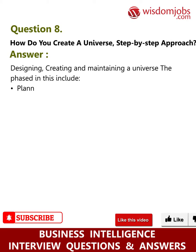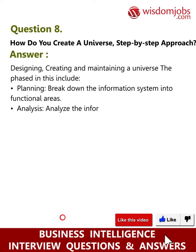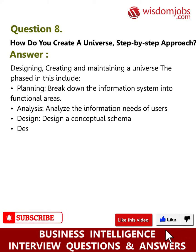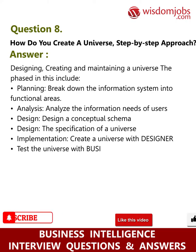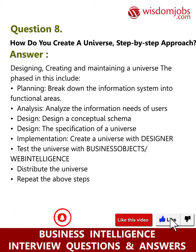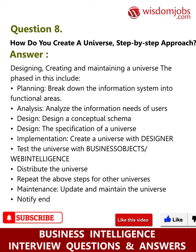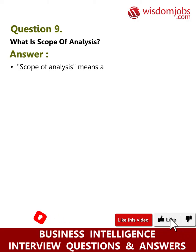Planning — break down the information system into functional areas. Analysis — analyze the information needs of users. Design — design a conceptual schema and design the specification of a universe. Implementation — create a universe with Designer. Test the universe with Business Objects/Web Intelligence. Distribute the universe. Repeat the above steps for other universes. Maintenance — update and maintain the universe, notify end users of changes.